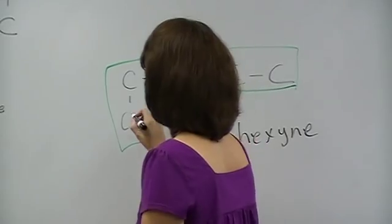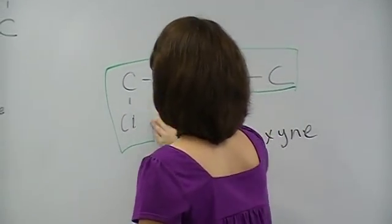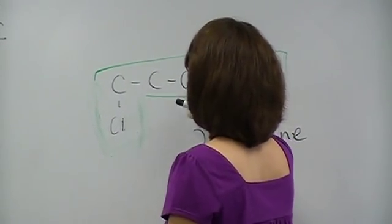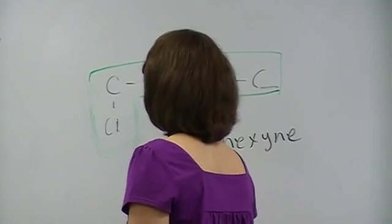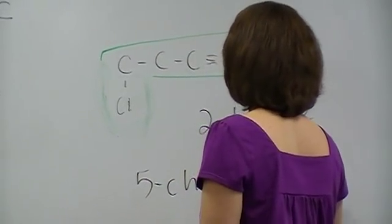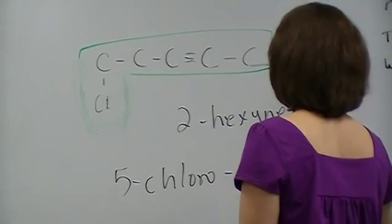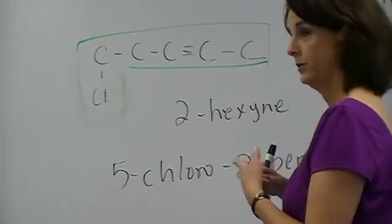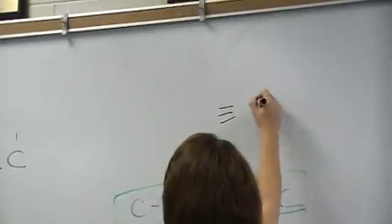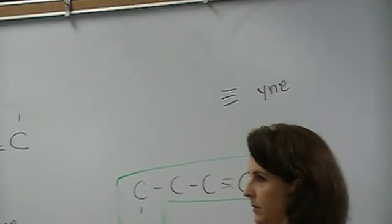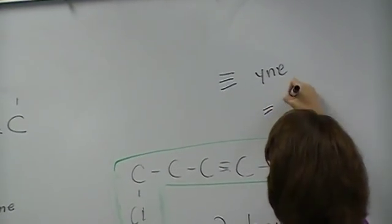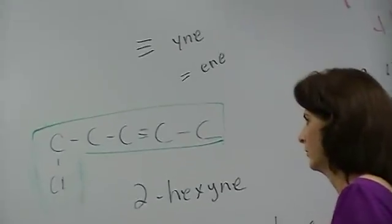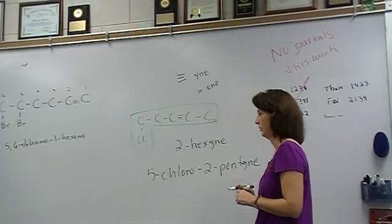Let's make it a chlorine. Now the name is, start from this side because it's the closest over here. Now it would be 5-chloro-2-pentyne. I can do my endings. The Y-N-E? Yeah. If it's a triple, it's a Y-N-E, always. Or today, always. If it's a double, it's an E-N-E. And you do it exactly the same way, whether it's an E or an I.